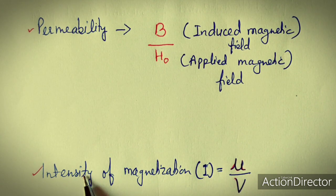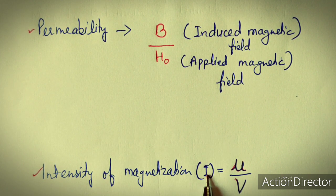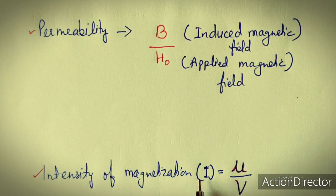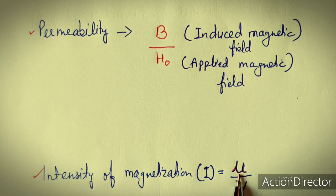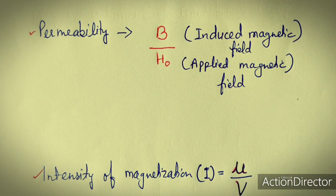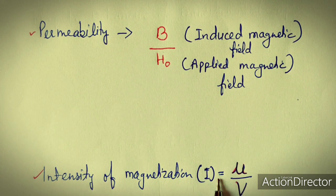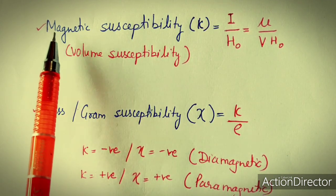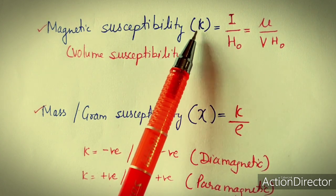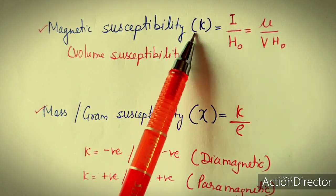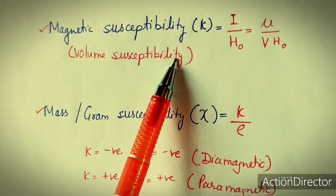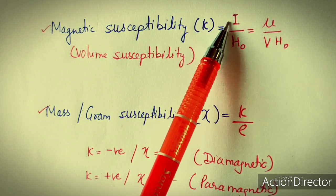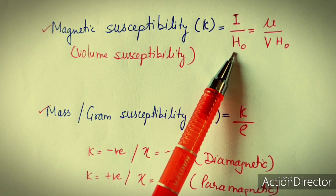The second terminology is intensity of magnetization, denoted by I. Intensity of magnetization is the magnetic moment generated per unit volume of a substance. The next terminology is magnetic susceptibility, denoted by kappa, also known as volume susceptibility. This volume susceptibility is the ratio of intensity of magnetization and applied magnetic field.